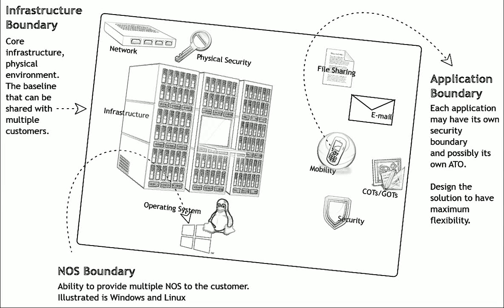Let's take a little time today to understand a little more about FSMA and boundaries and how they make up the ATO process, so we can get a better understanding of these primary components. Illustrated in this drawing, we have three areas we're going to talk about: infrastructure boundaries, network operating system boundaries, and application boundaries. Let's go ahead and start with the network or infrastructure boundary.